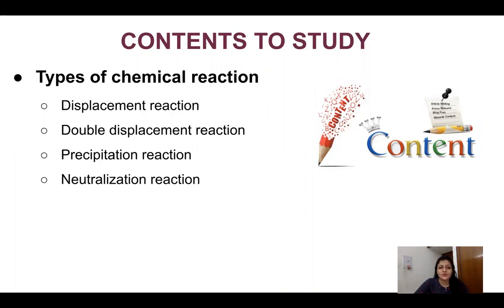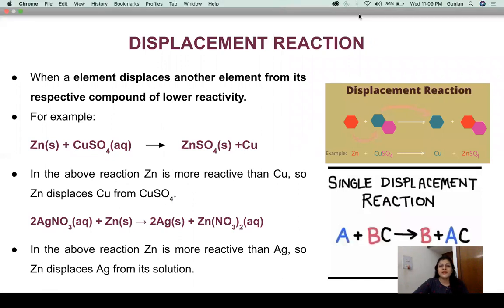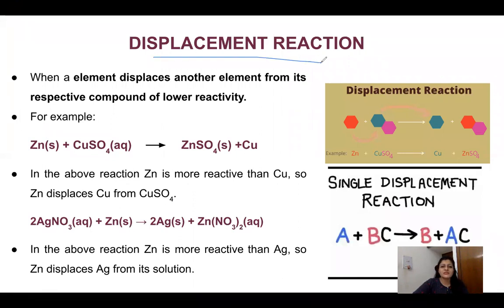So let's start. Under this video, what we are going to study: we are going to do the other types of chemical reactions. What are left? One is displacement reaction, then double displacement reaction, then precipitation reaction, and the last one is neutralization reaction. First of all, we are going to start with displacement reaction.